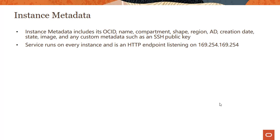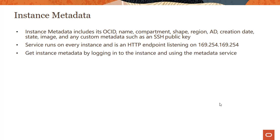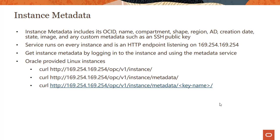Instance Metadata runs on every instance and is an HTTP endpoint listening at IP address 169.254.169.254 — really simple to remember. You can get Instance Metadata by logging into the instance and using the metadata service. There are straightforward commands where you can get all the metadata or get specific metadata values.